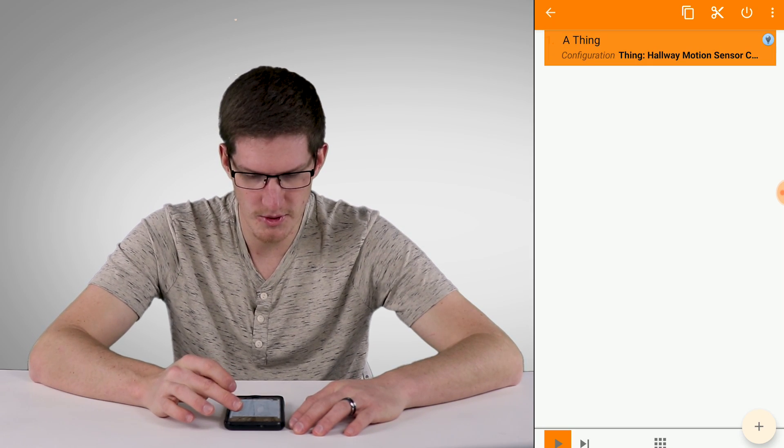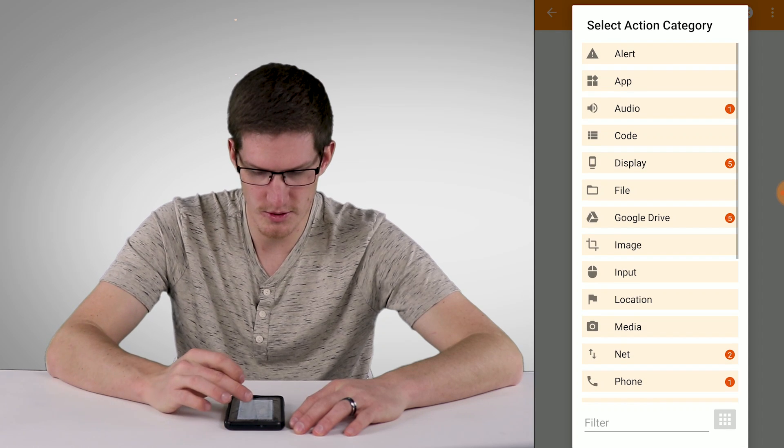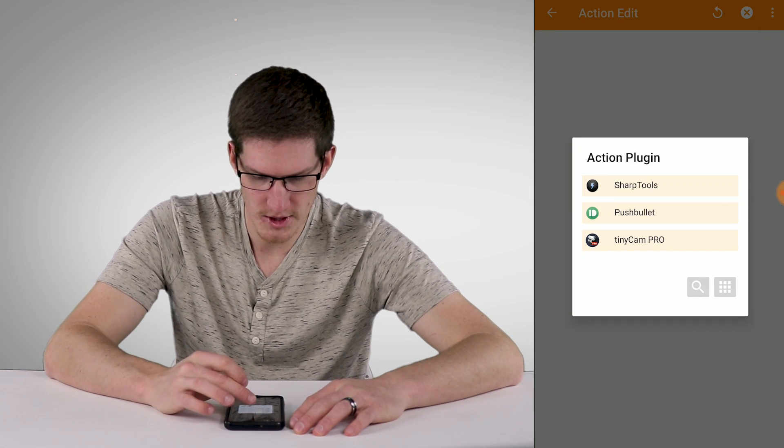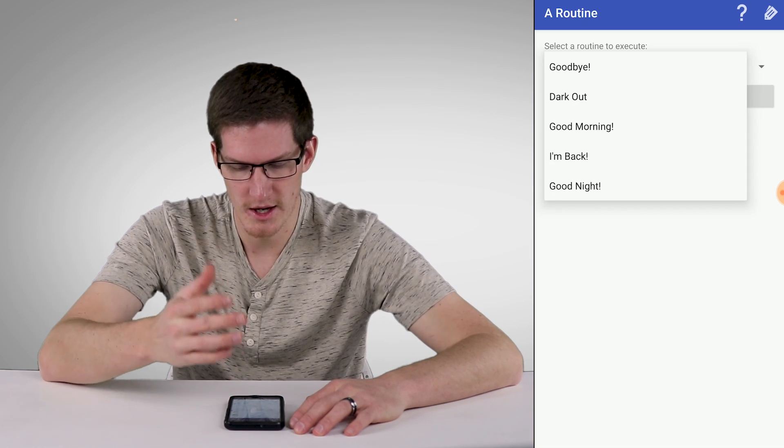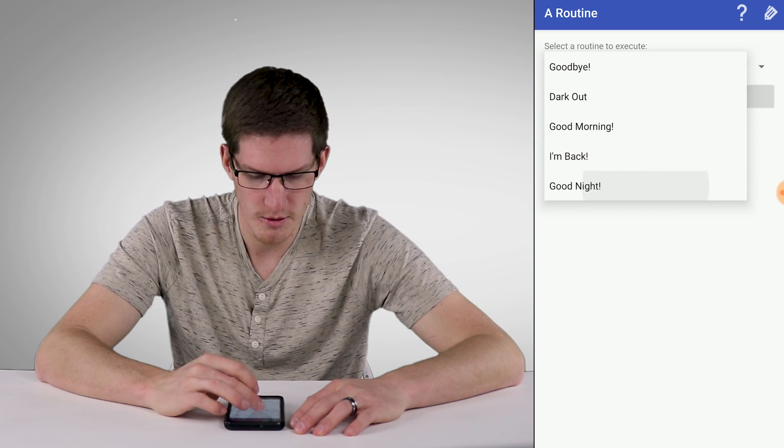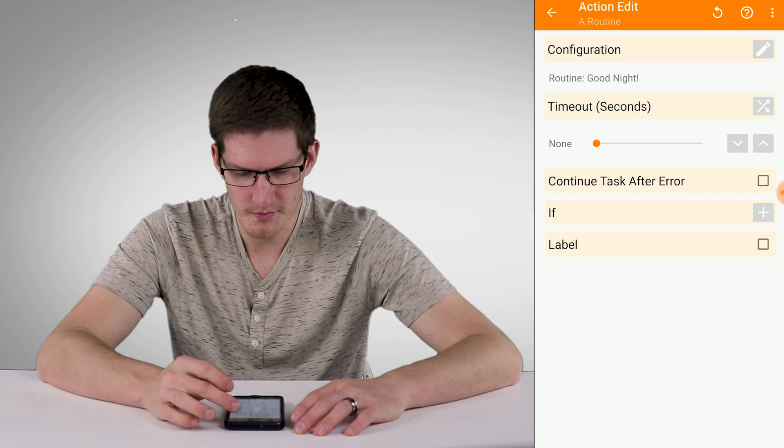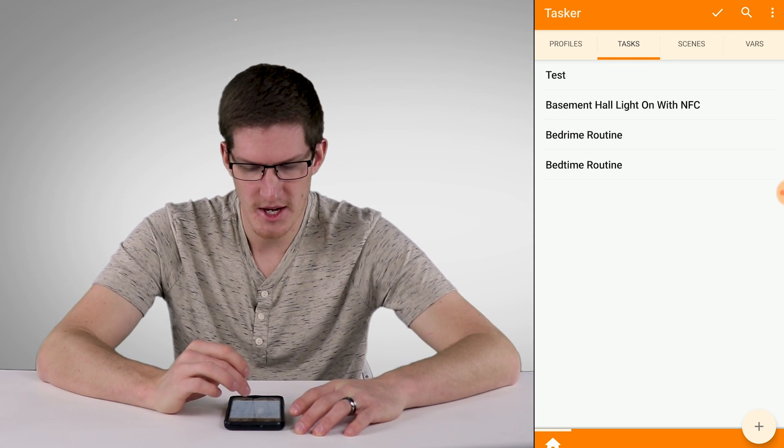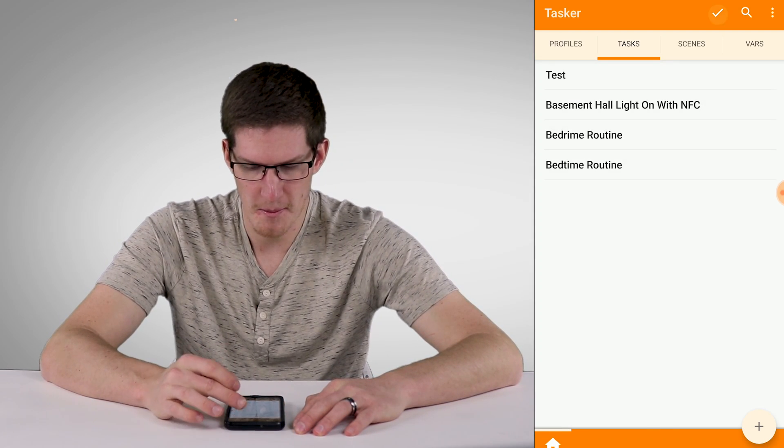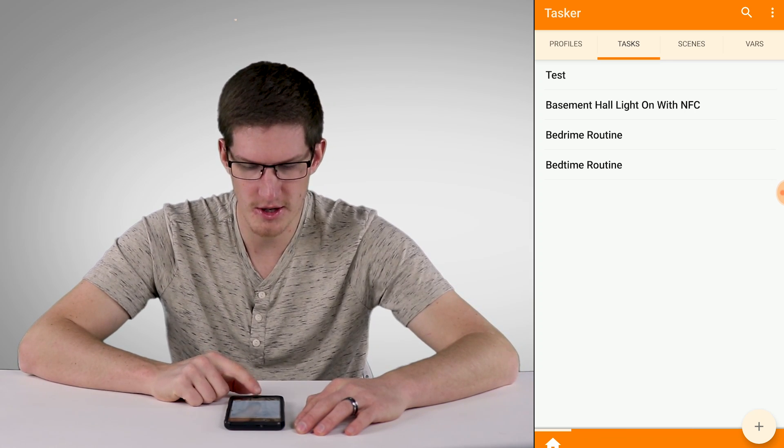But we're not doing that in this case. So I'm going to cut that and redo it. We'll go into Plugin once again and Sharp Tools. And we're going to go to Routine. And we'll click on Configuration again and just simply select your routine, which mine's going to be Good Night. And we'll just go back. And now that's saved as a task under Bedtime Routine. So we can just go ahead and click the check mark there.